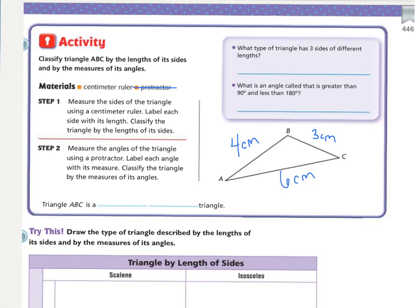If you measured correctly, you should have side AB as four centimeters, side BC as three centimeters, and side CA as six centimeters. What type of triangle has three sides of different lengths? To me, that triangle looks like it's leaning towards one side more than the other — that is a scalene triangle.